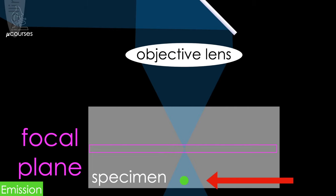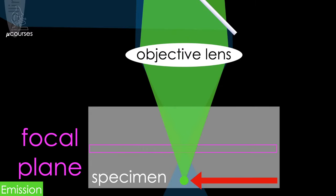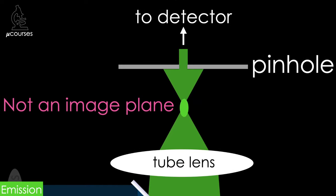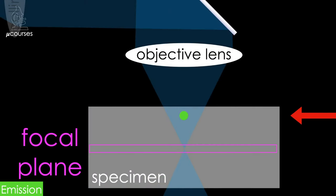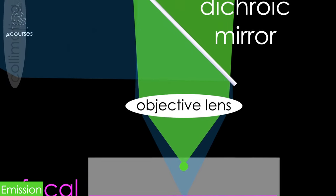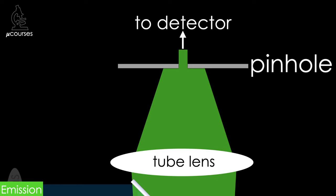Any objects outside the focal plane that are excited by the laser also emit photons collected by the objective lens. However, images of these objects focus outside of the image plane such that the image is out of focus when it reaches the pinhole. The pinhole therefore blocks the majority of light emitted from out-of-focus objects, preventing this light from reaching the detector. Whether objects reside above or below the focal plane, the pinhole blocks the majority of the out-of-focus fluorescence. Note that the pinhole cannot block all of it — so it's incorrect to say that confocal microscopes eliminate out-of-focus fluorescence, but they can greatly reduce it.